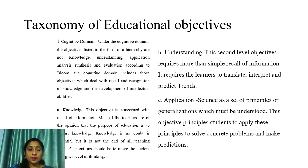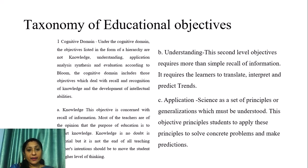In the cognitive domain, the objectives are listed in the form of a hierarchy: knowledge, understanding, application, analysis, synthesis, and evaluation. According to Bloom, the cognitive domain includes those objectives which deal with the recall and recognition of knowledge and the development of intellectual abilities.